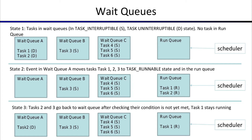In state three, task 1 is running and keeps running, but task 2 needed more IO, so it goes back to the wait queue in its task_uninterruptible state. The other tasks in wait queues B and C are still there, and task 1 is still running in the run queue. This is what keeps going on — tasks move between wait queues and the run queue, and the scheduler only schedules the ones that are in task_runnable state and therefore in the run queue.